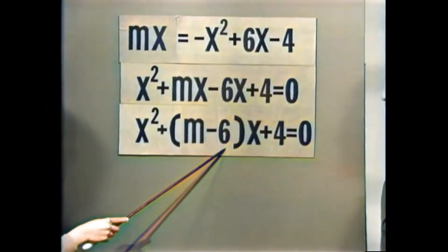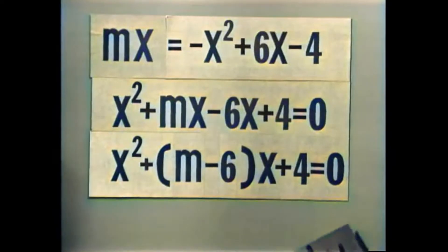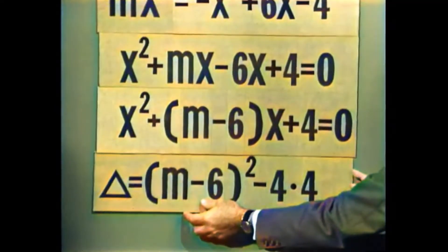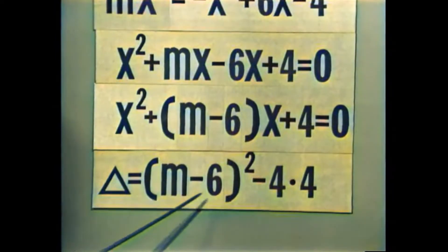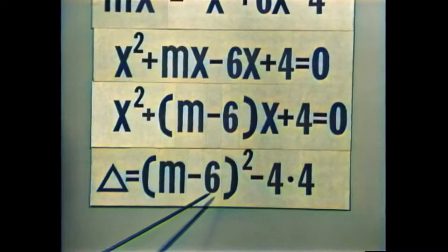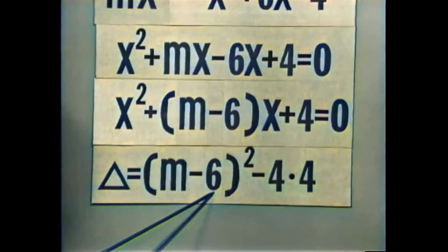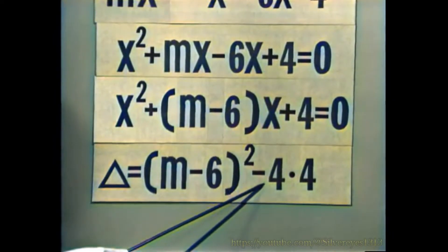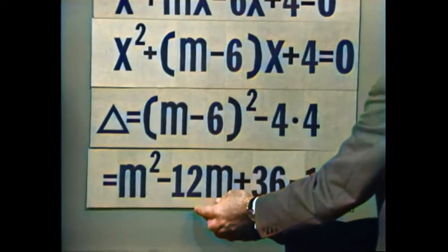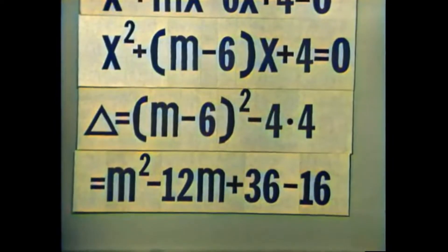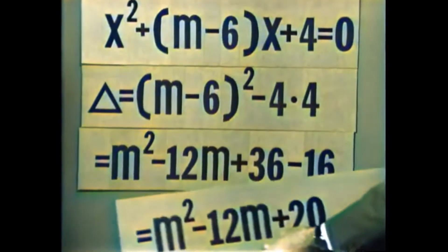M מינוס 6 הוא הגורם הראשון, בריבוע, מינוס 4 כפול 4. נקבל: (M-6)² פחות 16. פותחים סוגריים: M² מינוס 12M פלוס 36 מינוס 16, כלומר M² מינוס 12M פלוס 20.